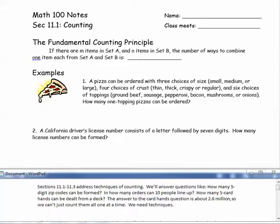Sections 11.1 through 11.3 address techniques of counting. We'll answer questions like: How many five-digit zip codes can be formed? In how many orders can 10 people line up? How many five-card hands can be dealt from a deck? The answer to the card hands question is about 2.6 million, so we can't just count them all one at a time. We need techniques.